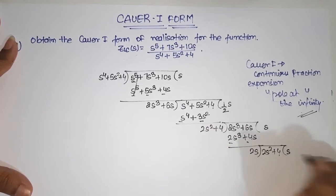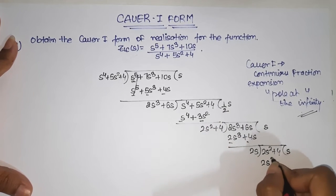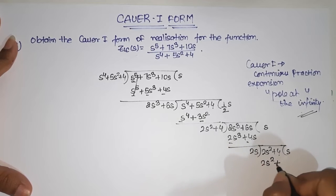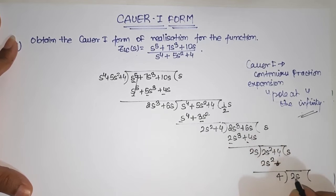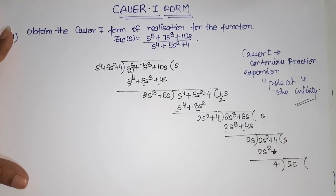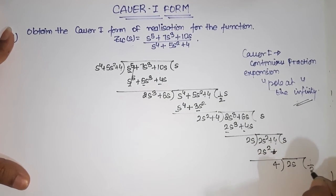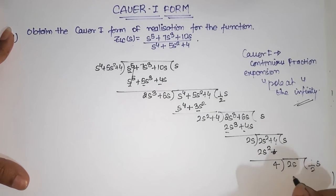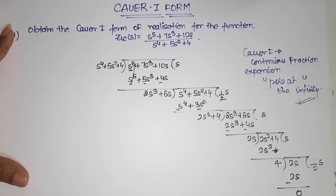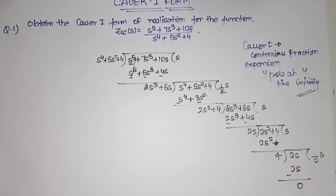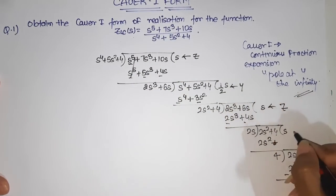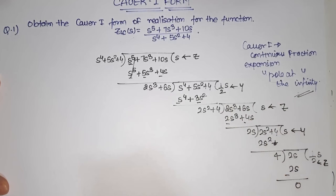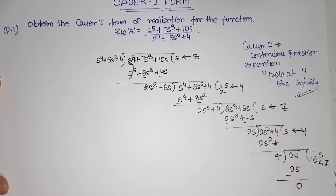Now 2s² + 4 divided by 2s. This becomes 2s² + 2, leaving remainder 2. Dividing again: 2s divided by 2, giving half s, then 2s, and subtracting gives 0. We have received a constant, so we stop. The quotients alternate: this is a Z component, this is a Y component, this is a Z component, and this is a Y component.